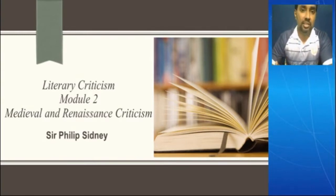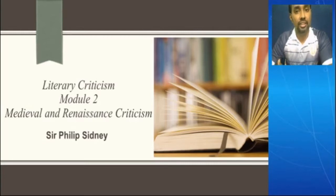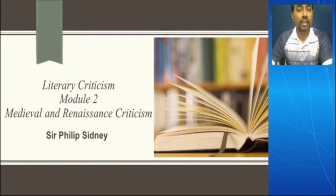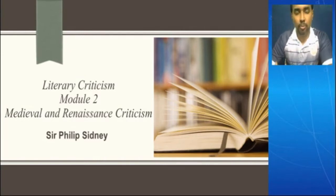Then we moved into renaissance literary criticism. We understood the Renaissance movement, and went on to discuss some of the popular figures such as Galileo, Copernicus, Thomas Hobbes, Geoffrey Chaucer, Dante, etc. We discussed the term humanism, which is very important with respect to the Renaissance. One of the important tasks literary critics took in this period was to raise objections against the arguments raised by Plato in his popular work, Republic.